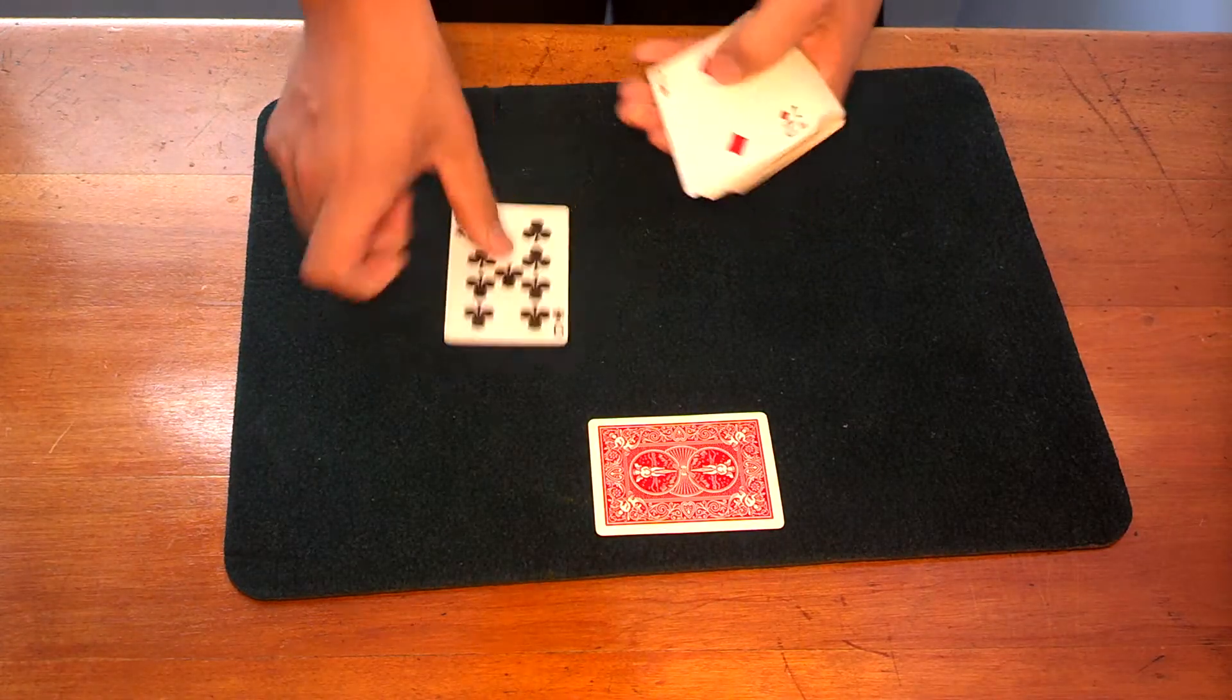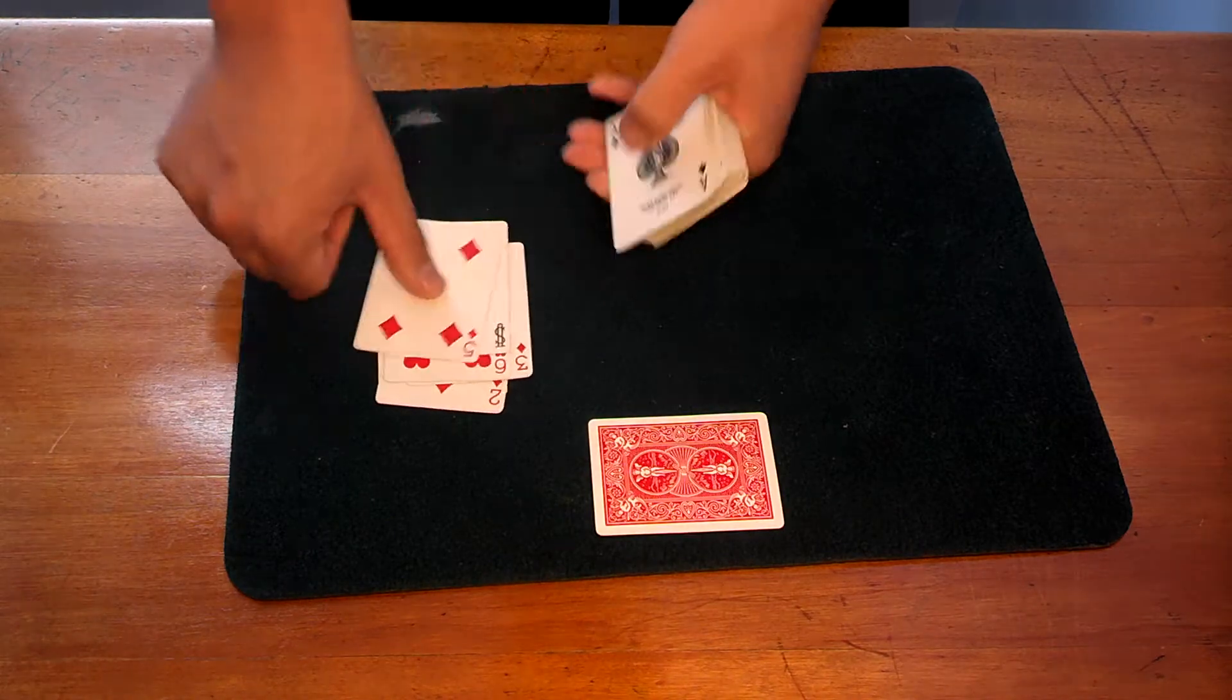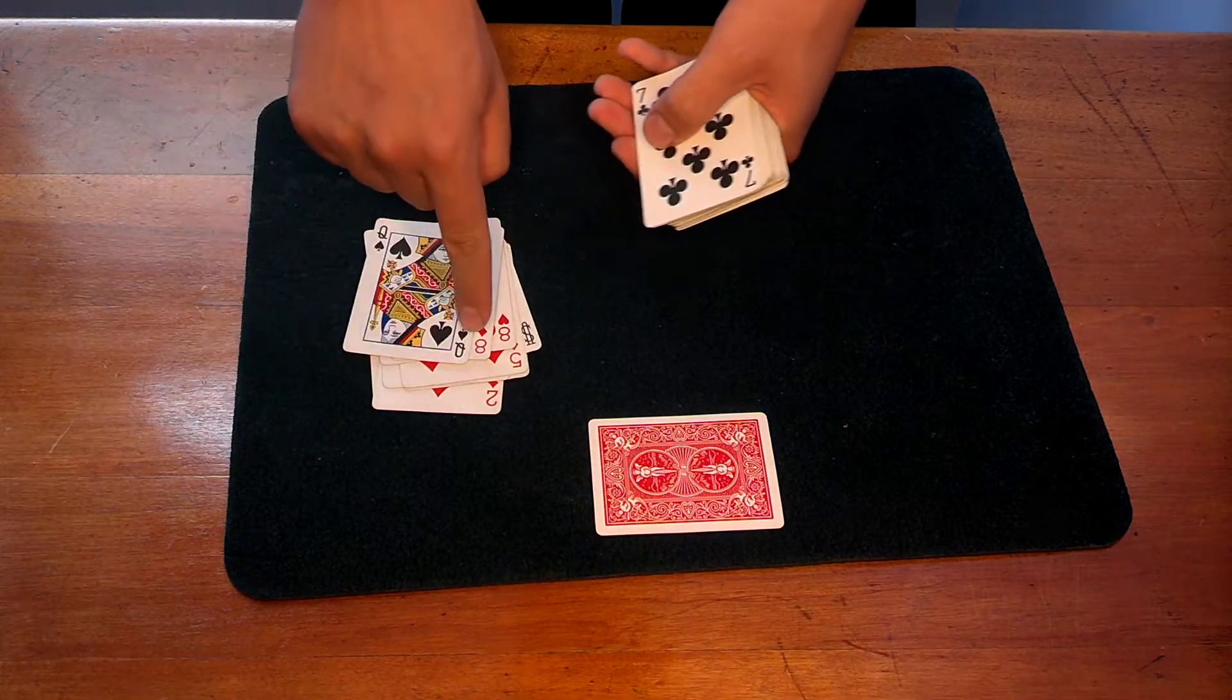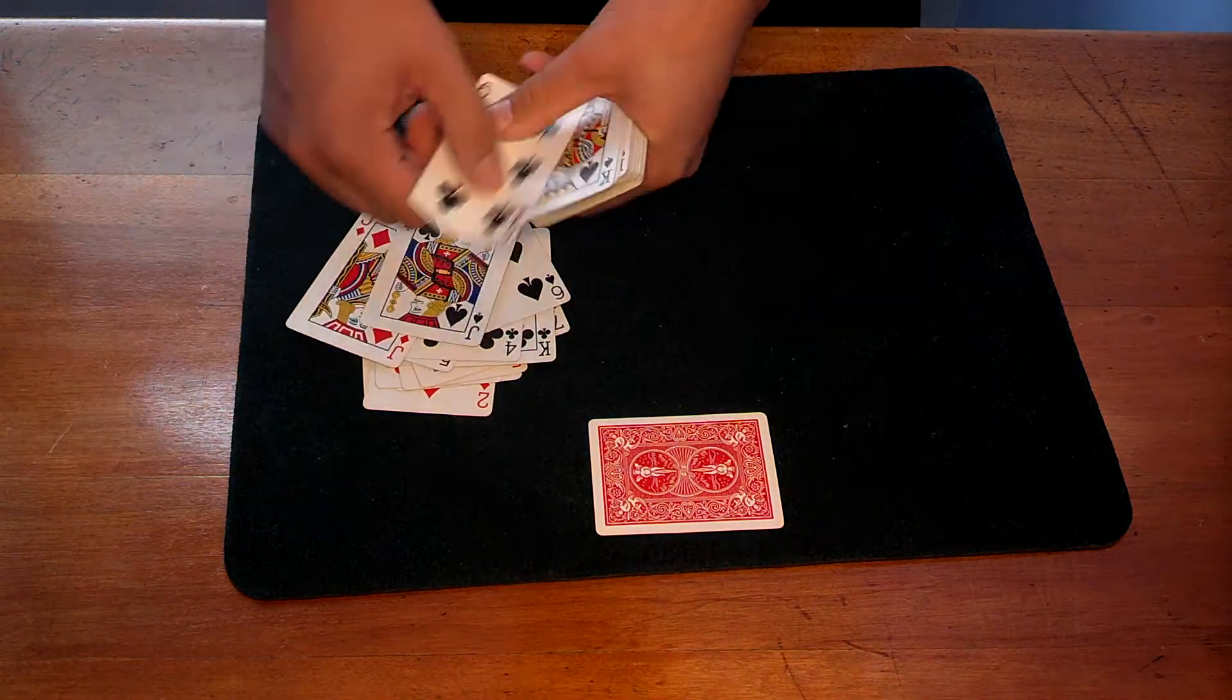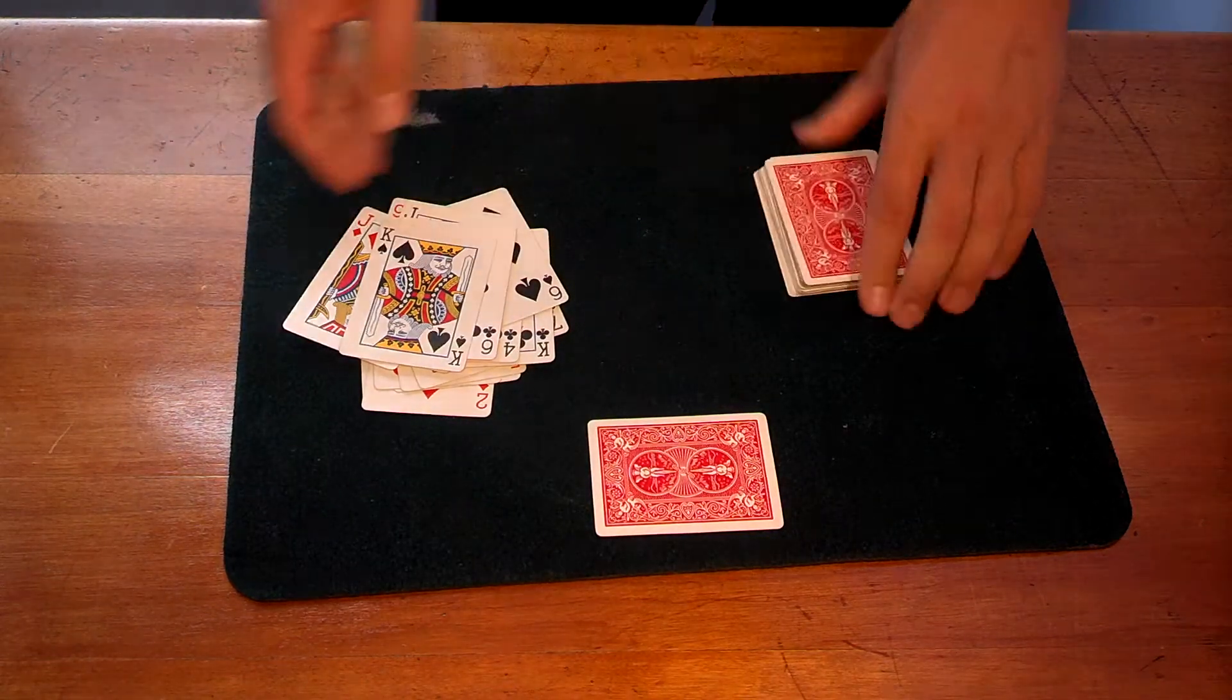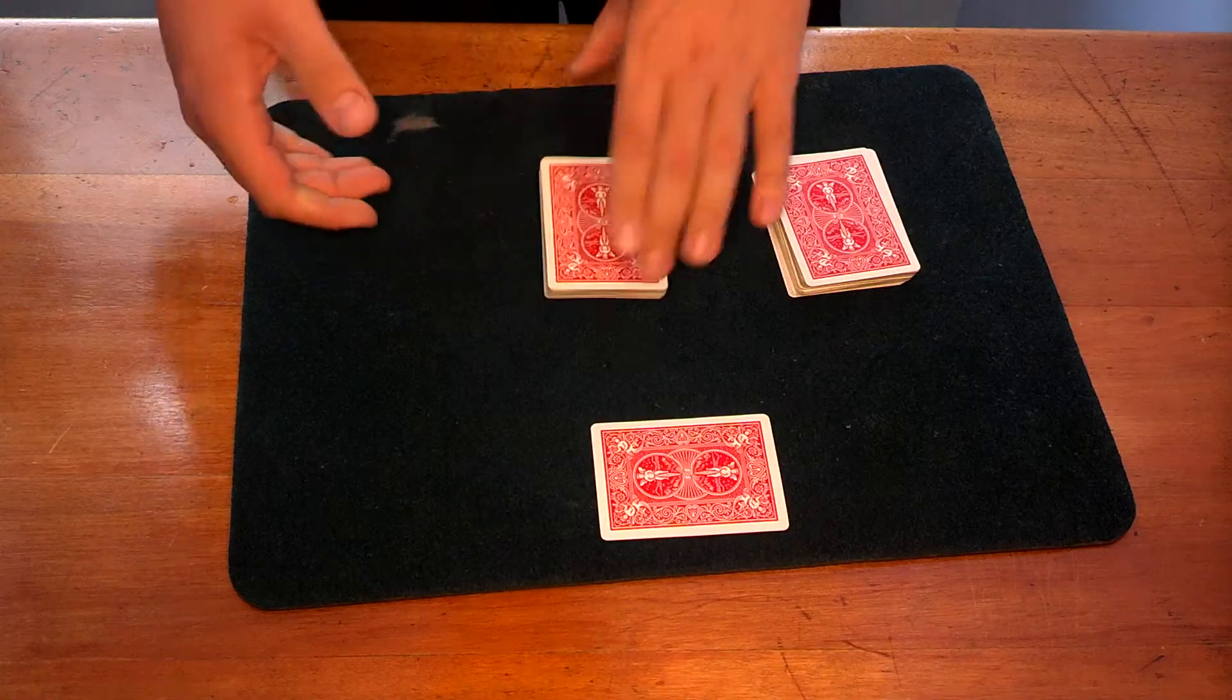Now you tell them to tell you when to stop. Make sure you clear the two eights before you say this so there's no way they can stop you before. So anywhere and stop anywhere and stop there. Alright, so now you have your two piles.